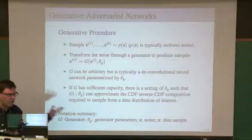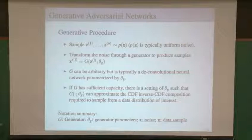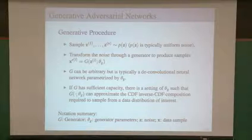This slide is primarily to establish the notation we'll be using throughout the talk. We have G the generator, theta_G the parameters we're trying to learn, z the noise variable, and x a sample in the data space. Visually, we start with noise, pass it through the generator, and get, for instance, an image.